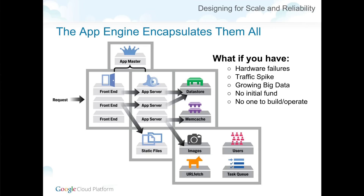App Engine provides all of that. It allows you to build that kind of cluster and encapsulate it in an App Engine application running on Google's data centers. You don't need to administer it anymore. If there's a hardware failure, your application won't stop at all. If there's a traffic spike, the app server automatically adds more instances on demand. If your big data is growing rapidly, the data store automatically splits your data into multiple shards. You can start using App Engine with no money upfront, without hiring expensive administrators. After migrating to App Engine, you don't need a dedicated Linux administrator — let them focus on more business-essential work.